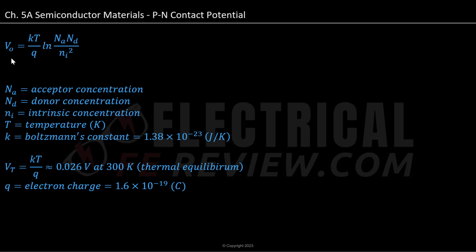We can define contact potential to be equal to K, our Boltzmann constant (1.38 × 10⁻²³), times T (temperature in Kelvin), divided by Q, our electron charge (1.6 × 10⁻¹⁹), multiplied by the natural log of Na (acceptor concentration) times Nd (donor concentration), divided by Ni squared, our intrinsic concentration. We can also note that Vt equals kT over Q and is estimated to be 0.026 volts at 300 Kelvin, which is thermal equilibrium.